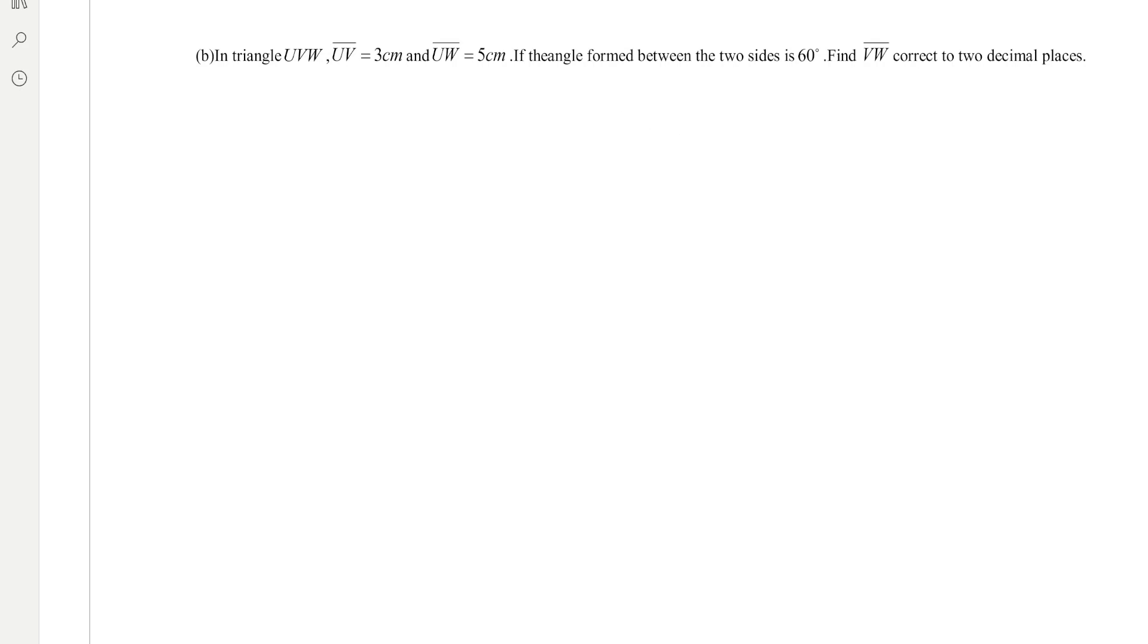So what you're going to do here, we are going to sketch the triangle. So this is our triangle, and from the triangle we can label it now to be UVW.